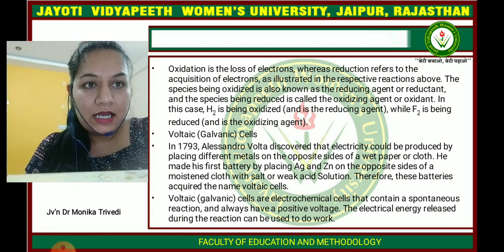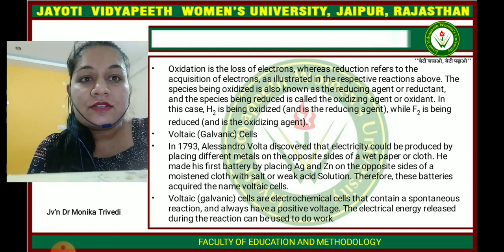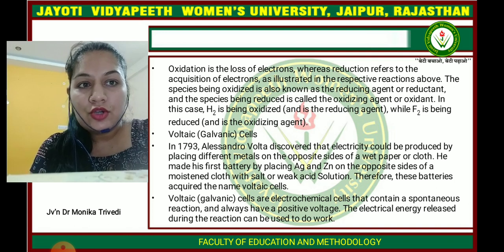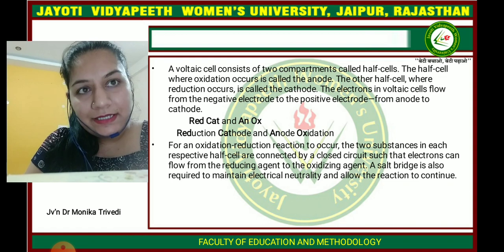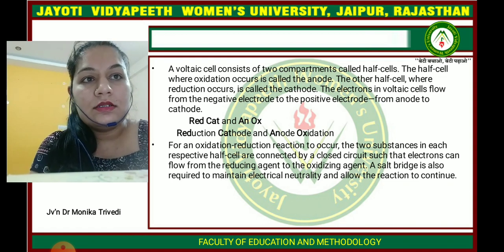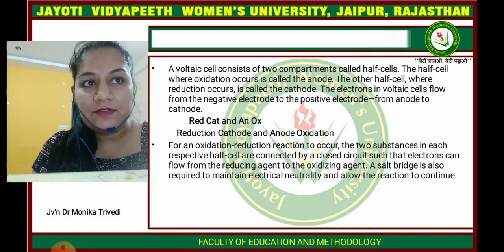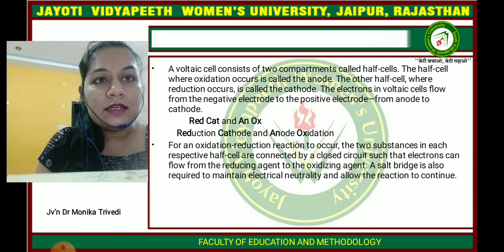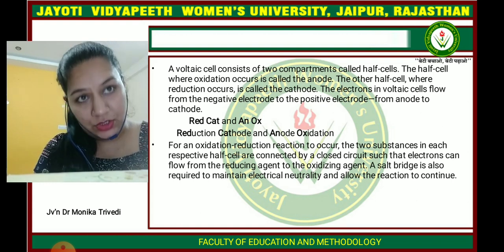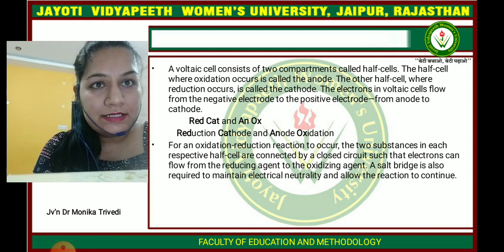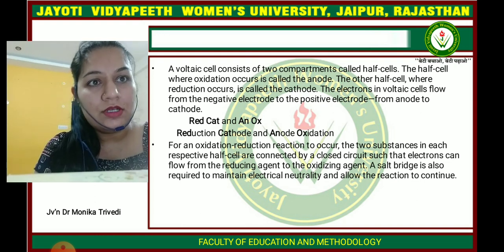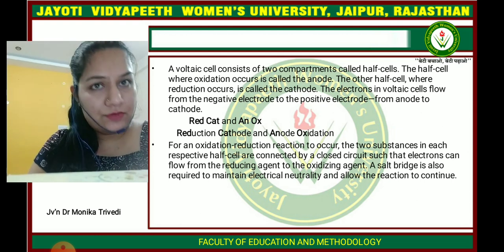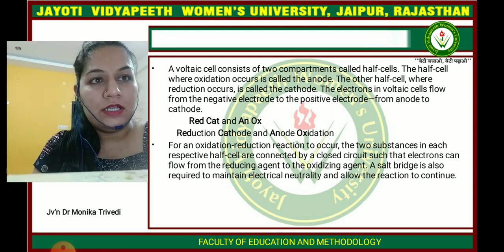Voltaic cells are electrochemical cells. Generally, they contain a spontaneous reaction and always have a positive voltage. The electrical energy released during the reaction can be used to do work. A voltaic cell consists of two half-cell reactions. Oxidation occurs in one half-cell, called the anode, and reduction occurs in the other half-cell, called the cathode. Electrons in a voltaic cell flow from the negative electrode to the positive electrode — from the anode to the cathode.